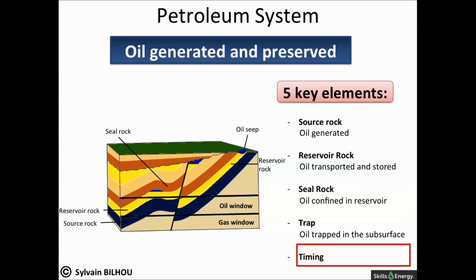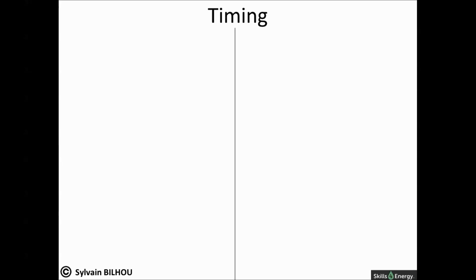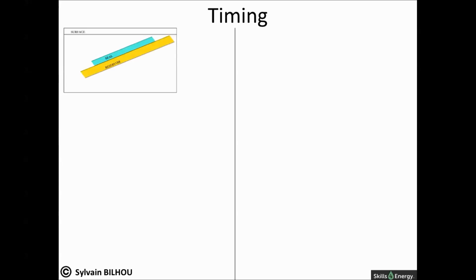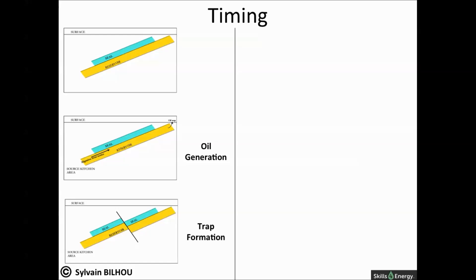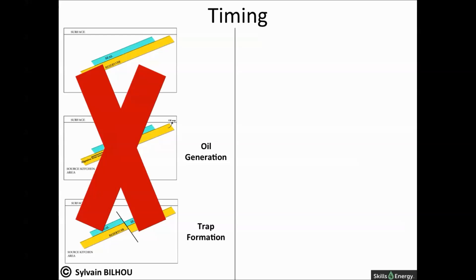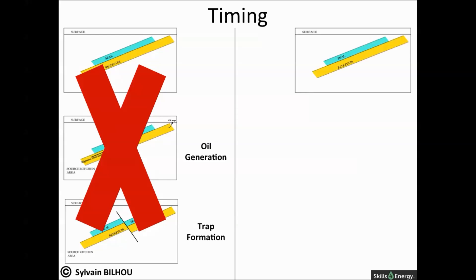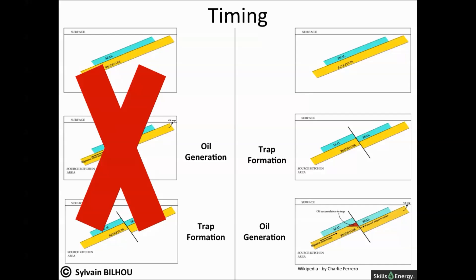The timing between oil expulsion and trap formation is also a key element for obtaining subsurface petroleum accumulations. As shown on the left, a trap generated after the hydrocarbon has already migrated will never contain oil and gas — hydrocarbons reach the surface before being trapped. On the right, the trap already exists during migration, so the hydrocarbons can be trapped.